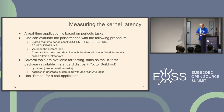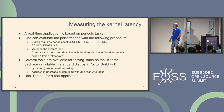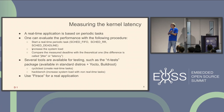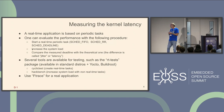If you want to measure the kernel latency — that is what we want to do with Xenomai — you start a real-time periodic task, increase the system load, and compare the measured deadline with the theoretical one. There are lots of tools available from the Preempt RT community. This is a package called RT-Test, available in Buildroot, Yocto, and standard distros. There is the cyclic test, which creates a real-time task, and Hackbench to increase the system load with non-real-time tasks. We can use FTRACE for a real application.